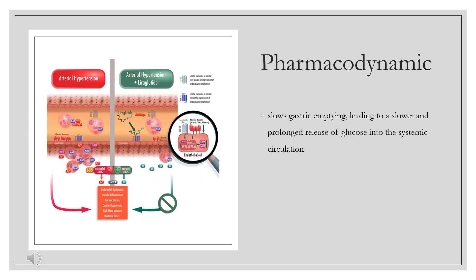Pharmacodynamics. When patients take Exenotide, the body's natural response to glucose is modulated. More insulin and less glucagon are released in response to glucose, though in cases of hypoglycemia a normal amount of glucagon is released. Exenotide also slows gastric emptying, leading to a slower and prolonged release of glucose into the systemic circulation. Together, these effects prevent hyper- and hypoglycemia.